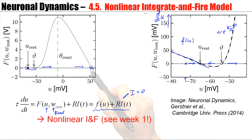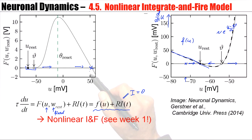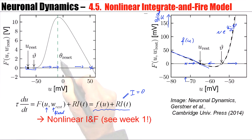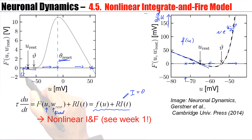At this point we go back to the two-dimensional neuron model where W increases, we have the downswing, and so forth. All this change of W and downswing is replaced by a threshold process. If the voltage variable hits the threshold theta-reset, then the voltage is reset to some new value U_R, which might be below or above the resting potential depending on the type of neuron being described.